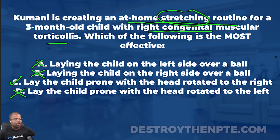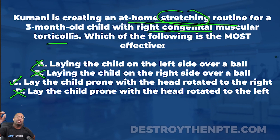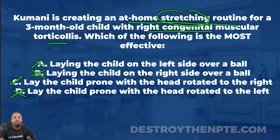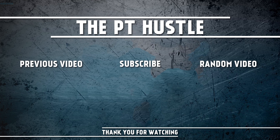Congratulations to those of you who got this one correct — the answer was C: lay the child prone with the head rotated to the right. For those of you on the podcast, go into the show notes and click the link. I have a cheat sheet that covers congenital muscular torticollis and the major things you need to know to review for the exam.